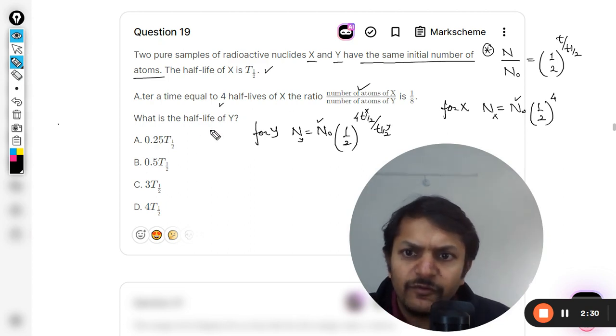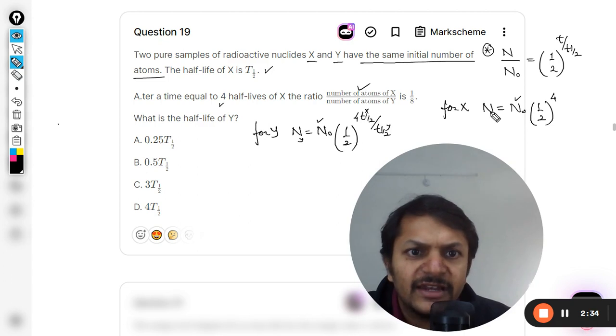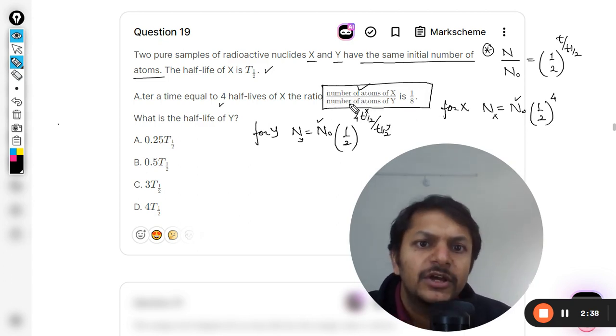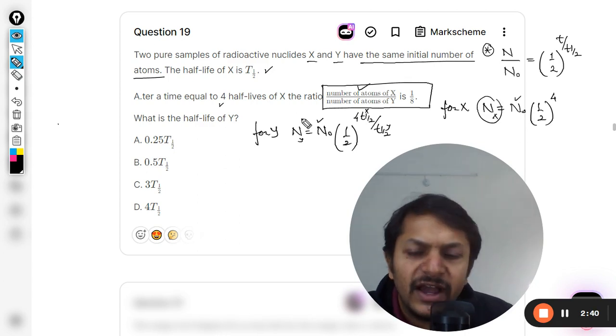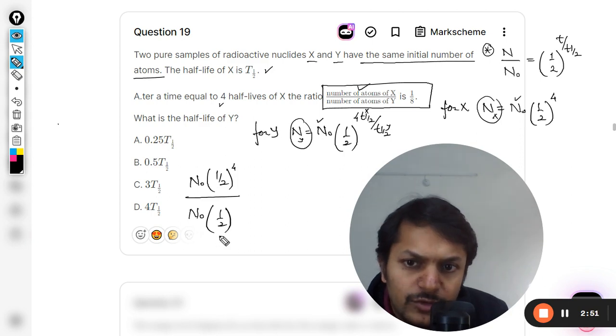What is the half-life of Y? And yeah, we are going to find this. So this is it. And we are now going to substitute our values here. So Nx divided by Ny is equal to 1 by 8. So be very careful while we are substituting these values, because otherwise things are really going to become algebraically difficult.